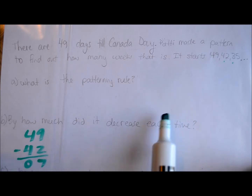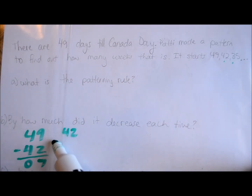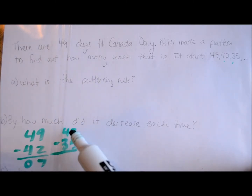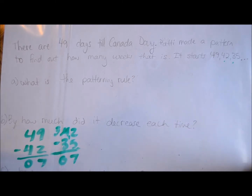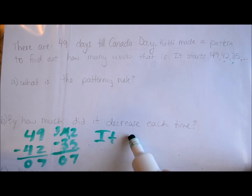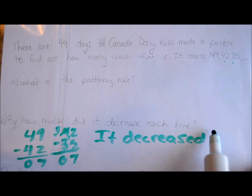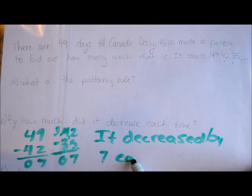Let's check the next pair. 42 take away 35. You can't take 5 away from 2, so we will borrow — that becomes a 3, put the 1 there. 5 away from 12 is 7, 3 away from 3 is 0. So how much did it decrease each time? It decreased by 7 each time.